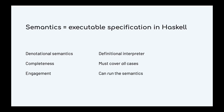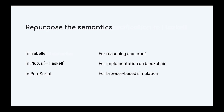We can reuse this semantics in a number of different ways. In the theorem prover Isabelle, we can use the semantics for reasoning and proof, using pretty much the same semantics since Isabelle uses a functional language. We can run the semantics in Plutus since Plutus is more or less Haskell. And we can translate the semantics into PureScript for simulation in the browser. One way to ensure all versions are the same is to extract Haskell code from Isabelle and test the original against this extracted code on random contracts.